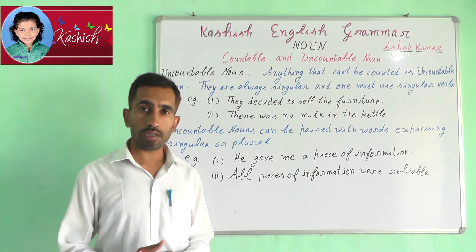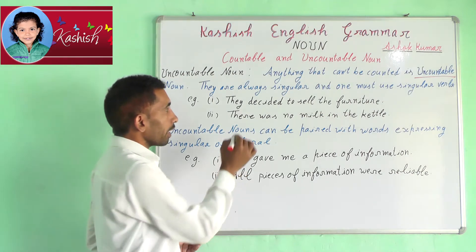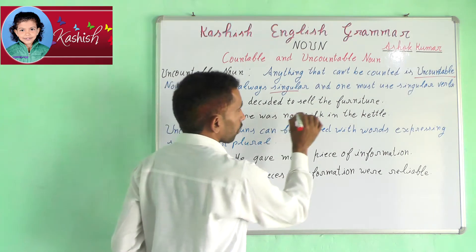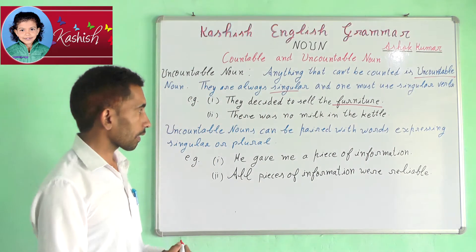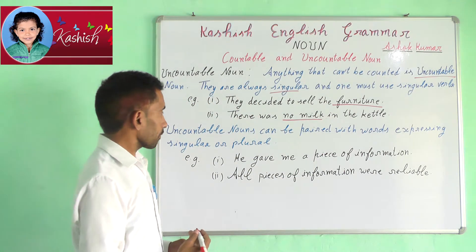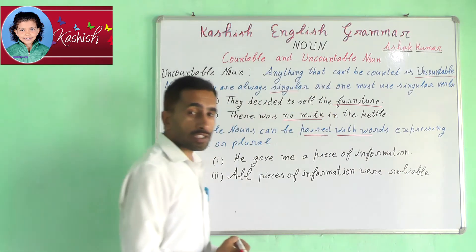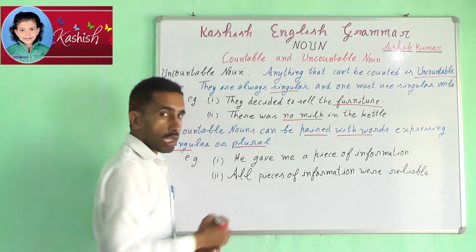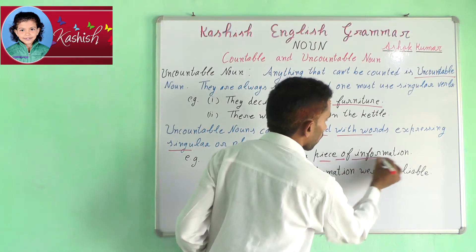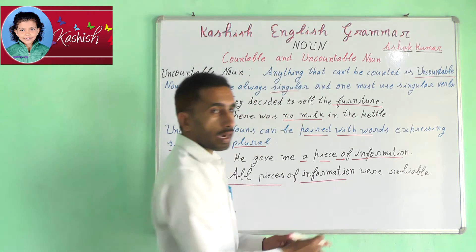Uncountable Noun: anything that cannot be counted is uncountable. They are always singular and one must use singular verbs. For example, they decided to sell the furniture. There was no milk in the kettle. Uncountable nouns can be paired with words expressing singular or plural. For example, he gave me a piece of information. All pieces of information were reliable.